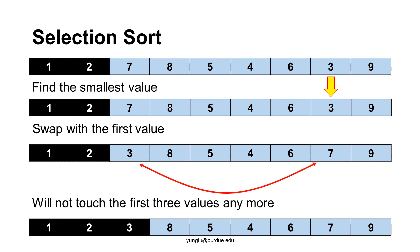The next iteration is similar. We will not consider the first two elements since they are already the smallest two values in the array. Among the remaining elements, we find the smallest value and swap it with the first value in the remaining part of the array.